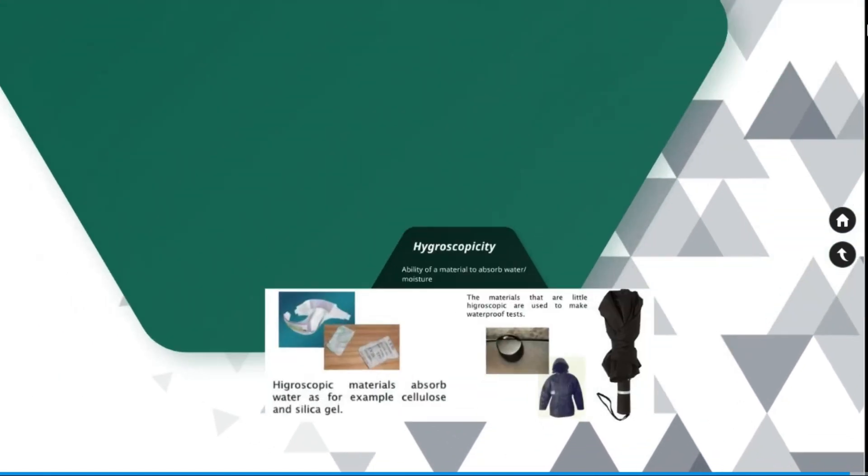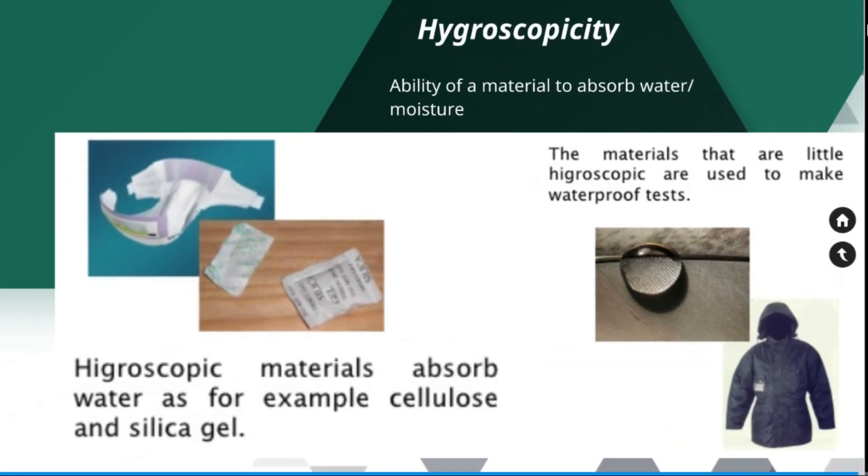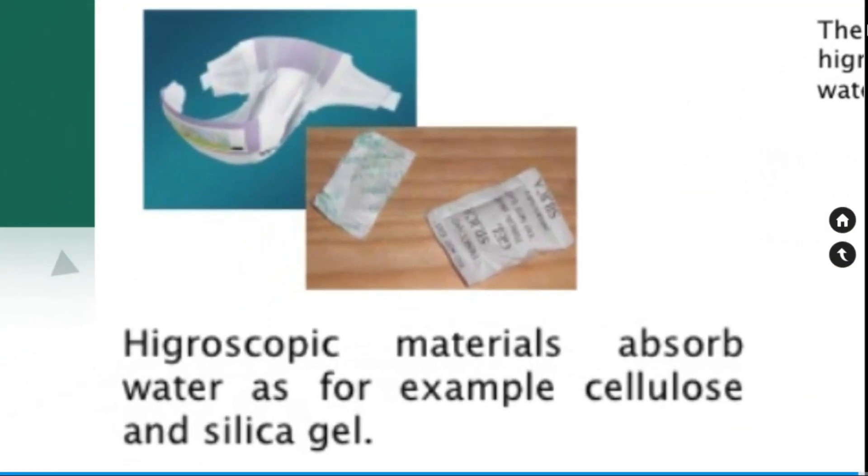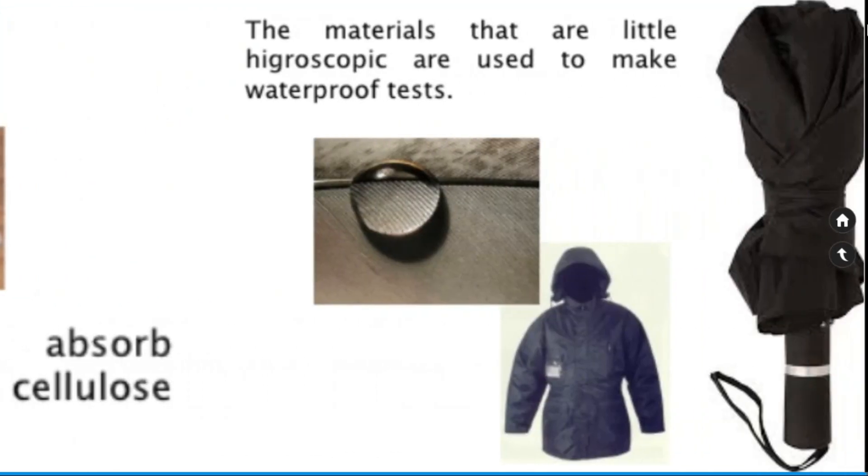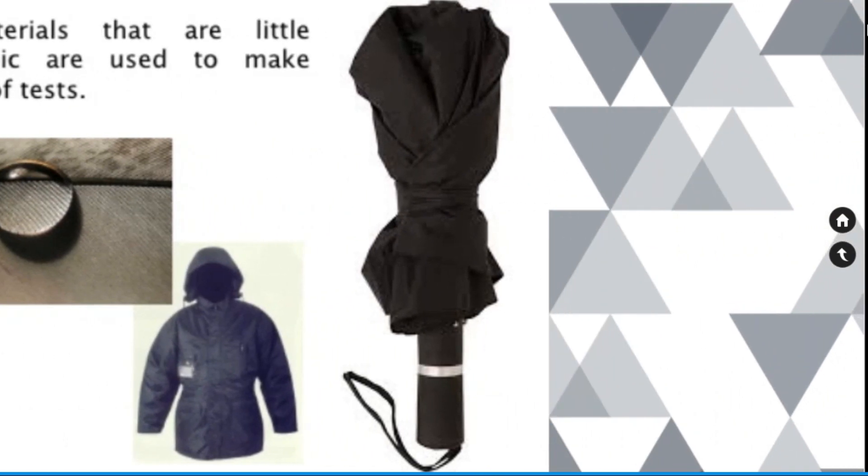Hydroscopicity. Ability of a material to absorb water or moisture is called hydroscopicity. Cellulose and silica gel is an example of hydroscopic materials. The materials that are little hydroscopic are used for waterproof products.